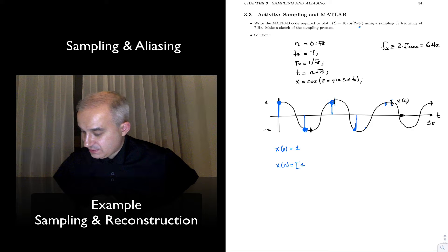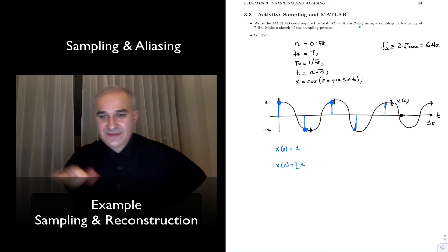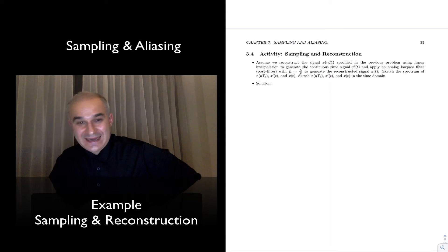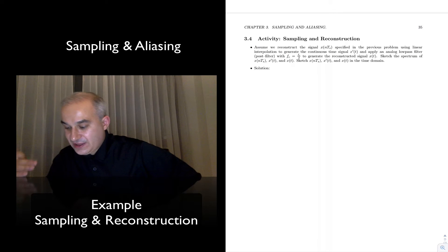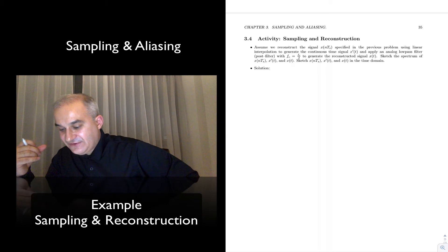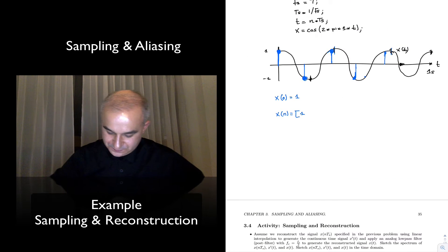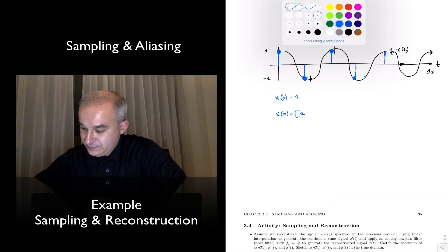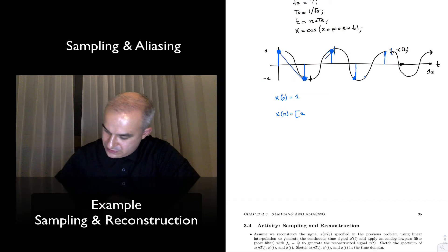Now the next activity is the same thing and says: assume that we reconstruct the signal x(n·ts) from the previous problem using a linear interpolator to generate a continuous time signal, and then apply an analog low-pass filter — the post filter — with fc = fs/2, to generate a reconstructed signal, and then sketch the spectra. So let's do this. From these samples, if you just join them, this will be the linear interpolator — it just joins the samples.